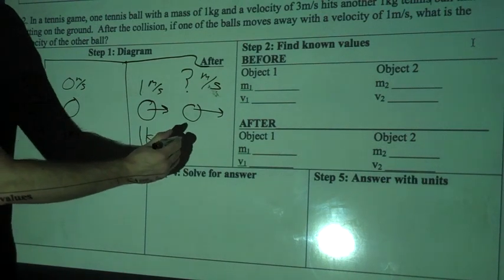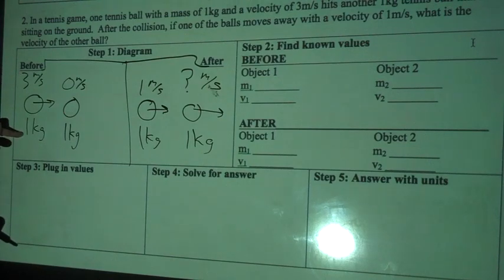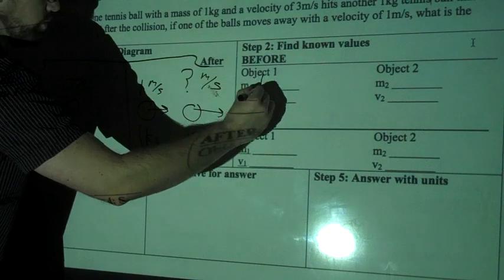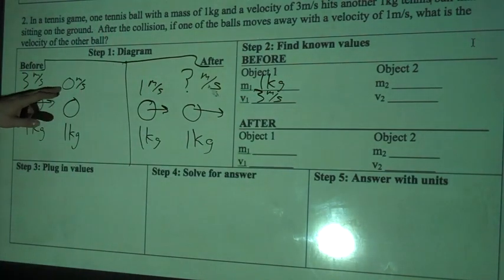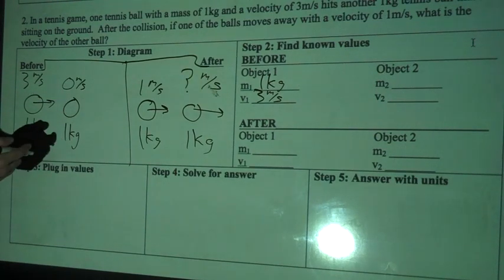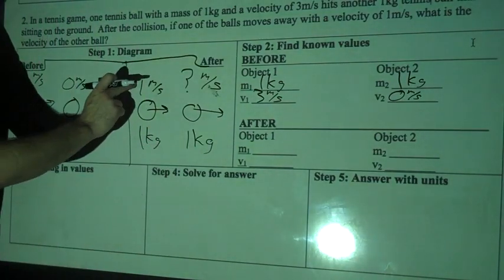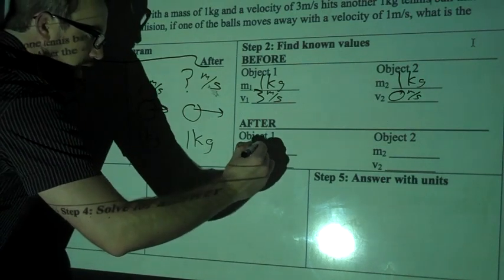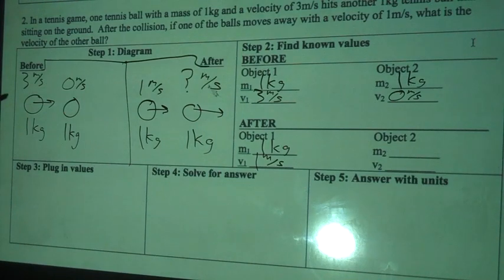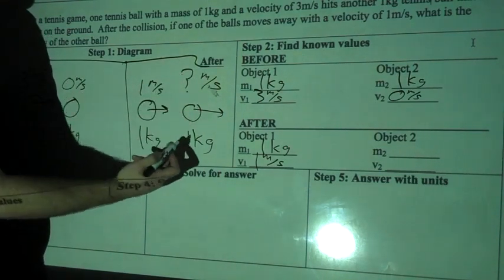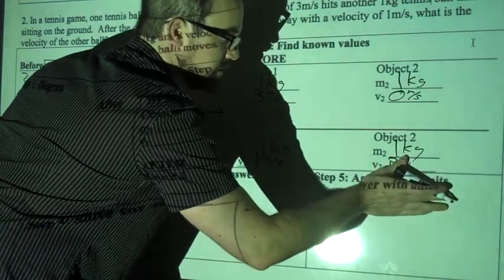We know it still has a mass of one kilogram, because it didn't say that one of these went on a diet. So before: object one had a mass of one kilogram and a velocity of three meters per second. Object two had a mass of one kilogram and a velocity of zero meters per second — at rest, not moving. Afterwards, one of them is going one meter per second and has a mass of one kilogram. Object two still has a mass of one kilogram, but its velocity we don't know, so I'll write a question mark there.